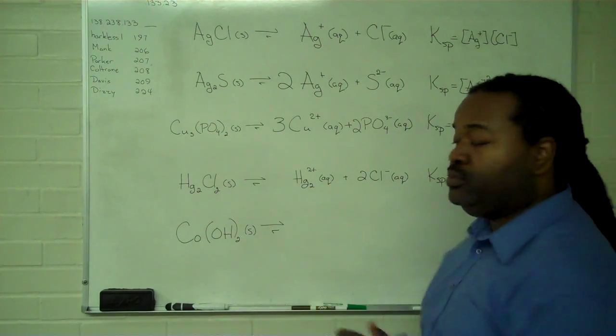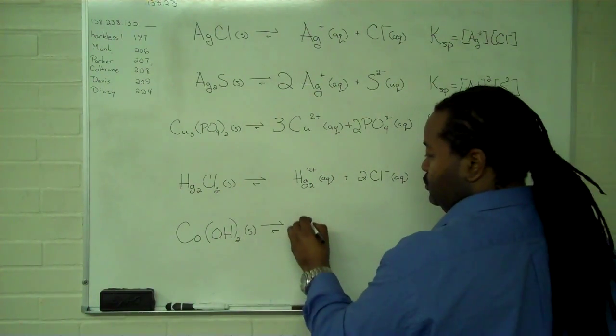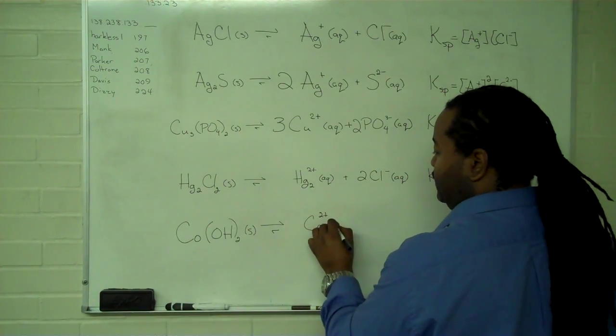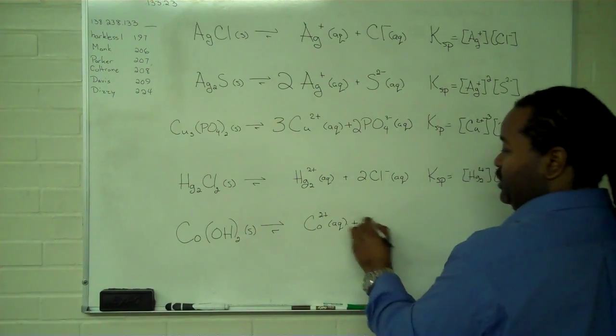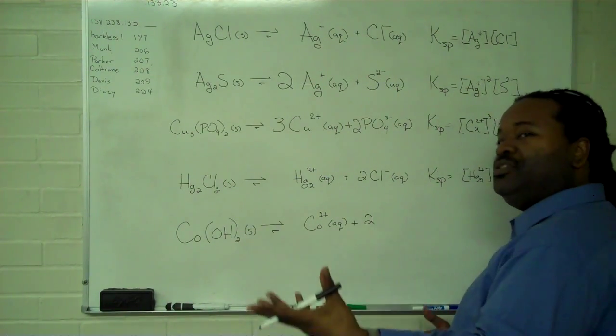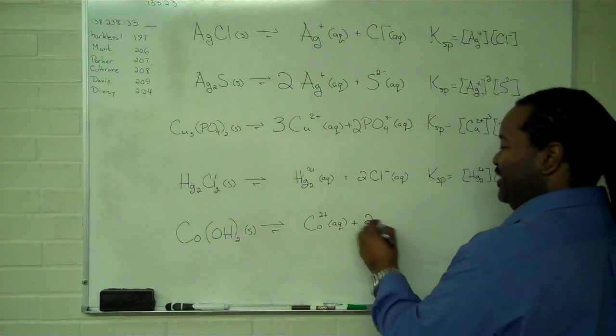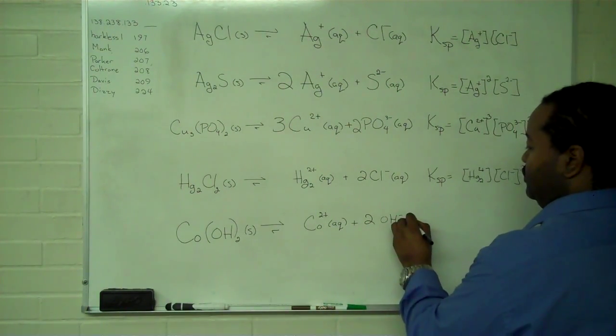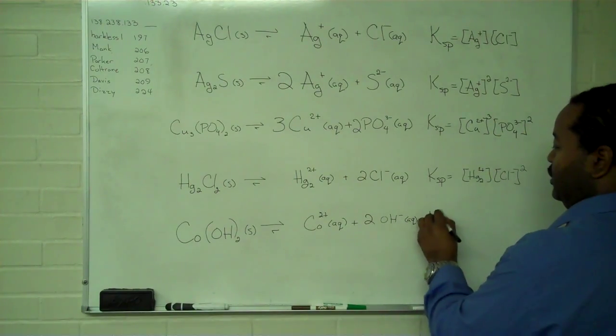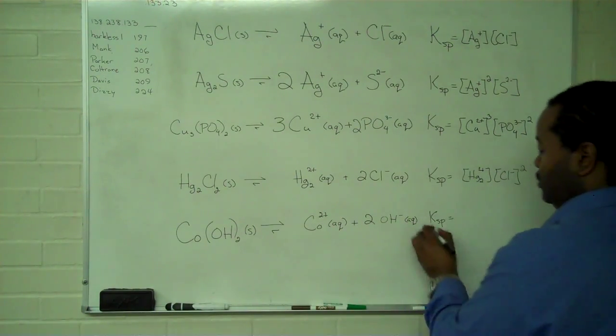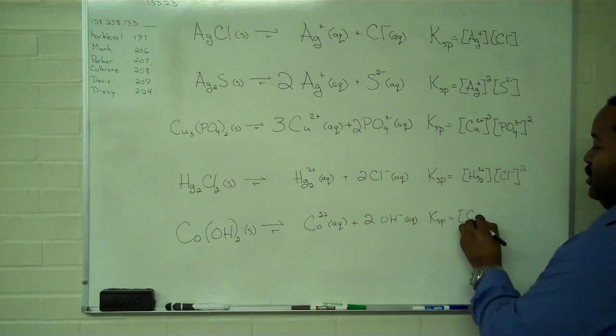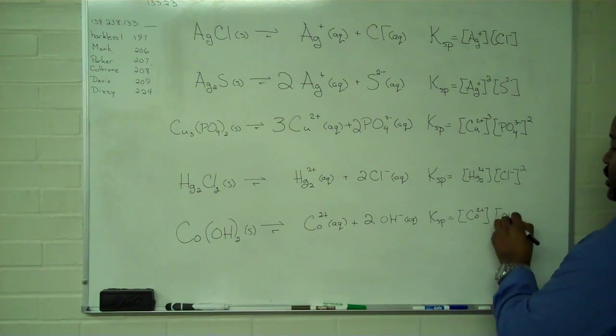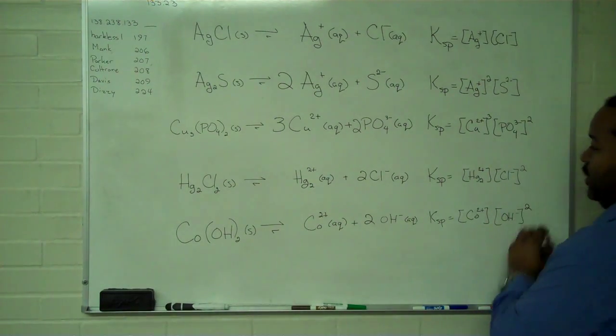Finally, cobalt two hydroxide. So we have our cobalt two plus, which in solution gives us a very nice color if we were doing an experiment. The hydroxide will have two, and our Ksp then requires a cobalt two plus concentration and our hydroxide concentration squared.